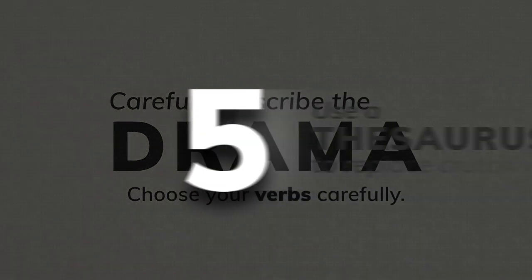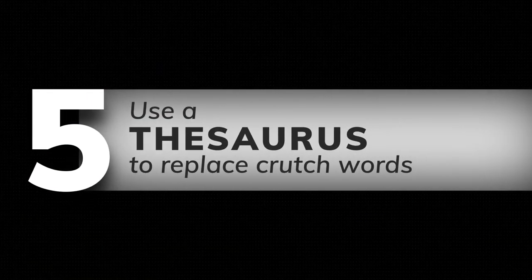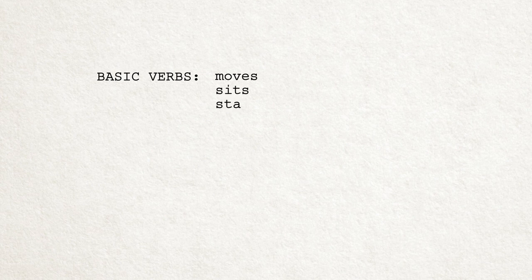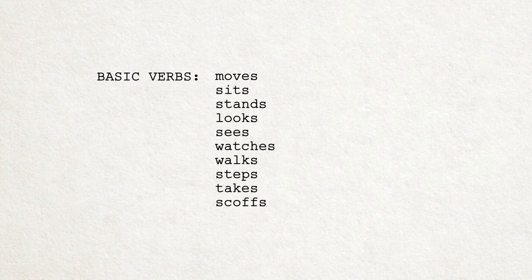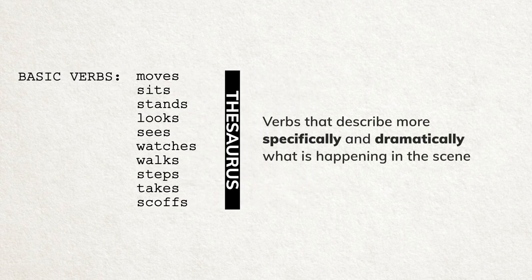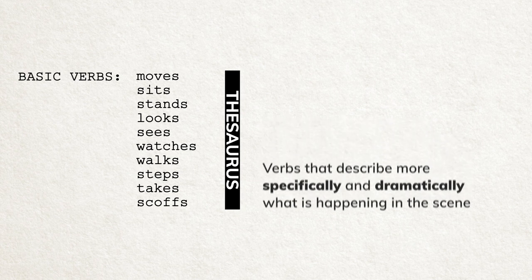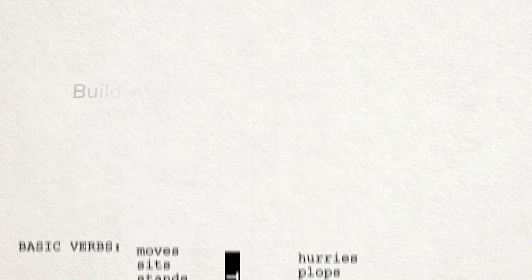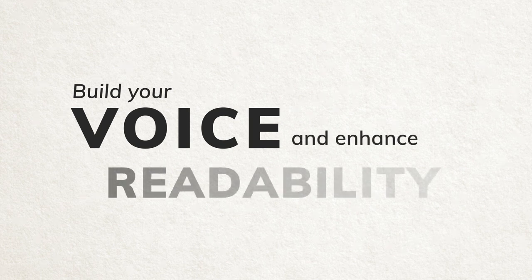Number five: use a thesaurus to replace crutch words. Your script is likely full of basic verbs — moves, sits, stands, looks, sees, watches, walks, steps, takes, scoffs. Most first drafts will have many instances of these weak verbs. This is your opportunity to enliven the drama on the page with verbs that describe more specifically and dramatically what is happening in the scene. For example: hurries, plops, rises, investigates, studies, steals, bounds, cackles. It's not cheating to use a thesaurus. Your goal is to build your voice and enhance readability.